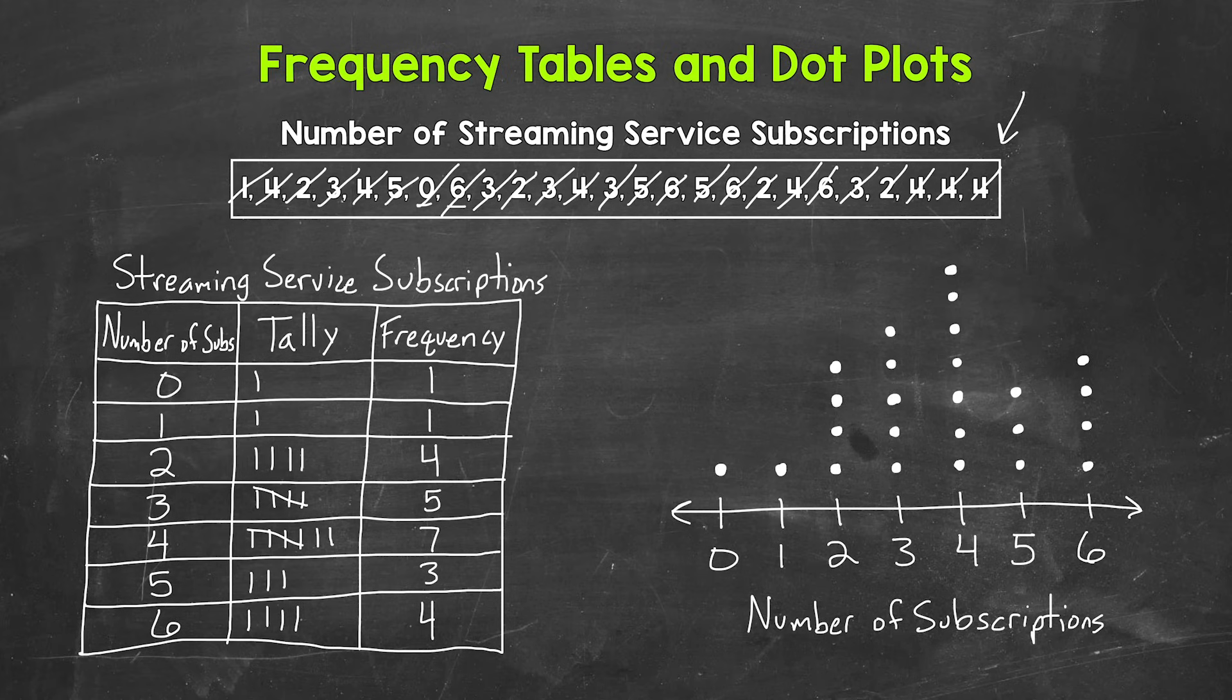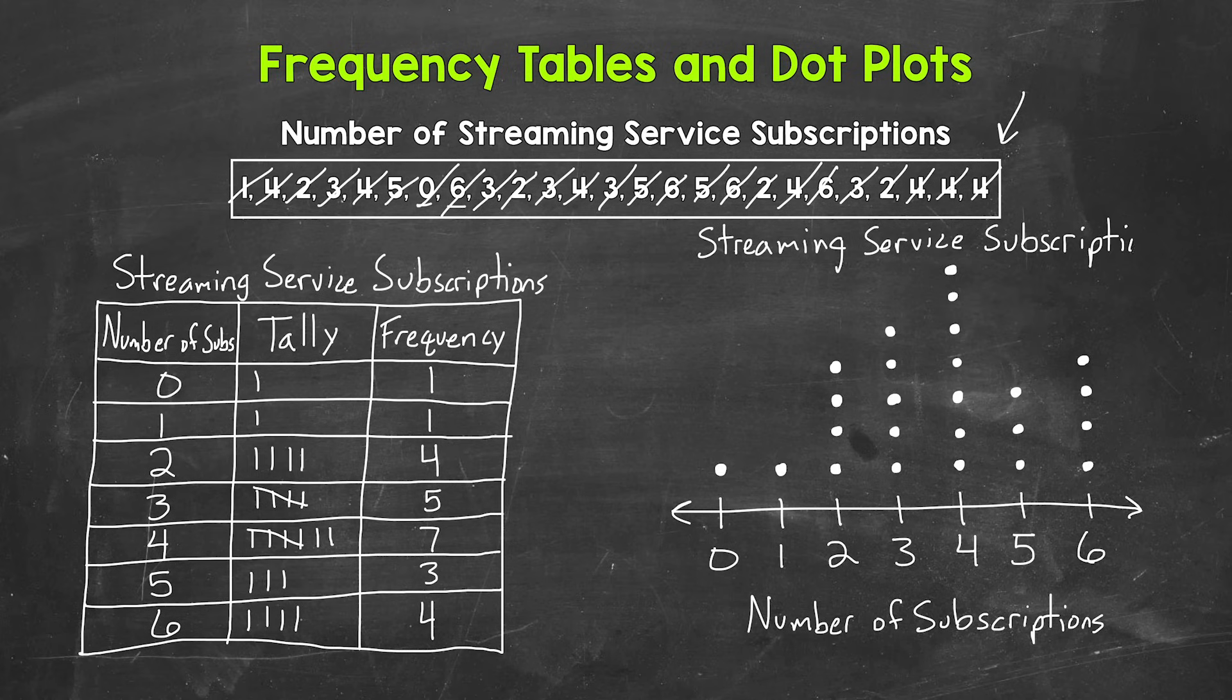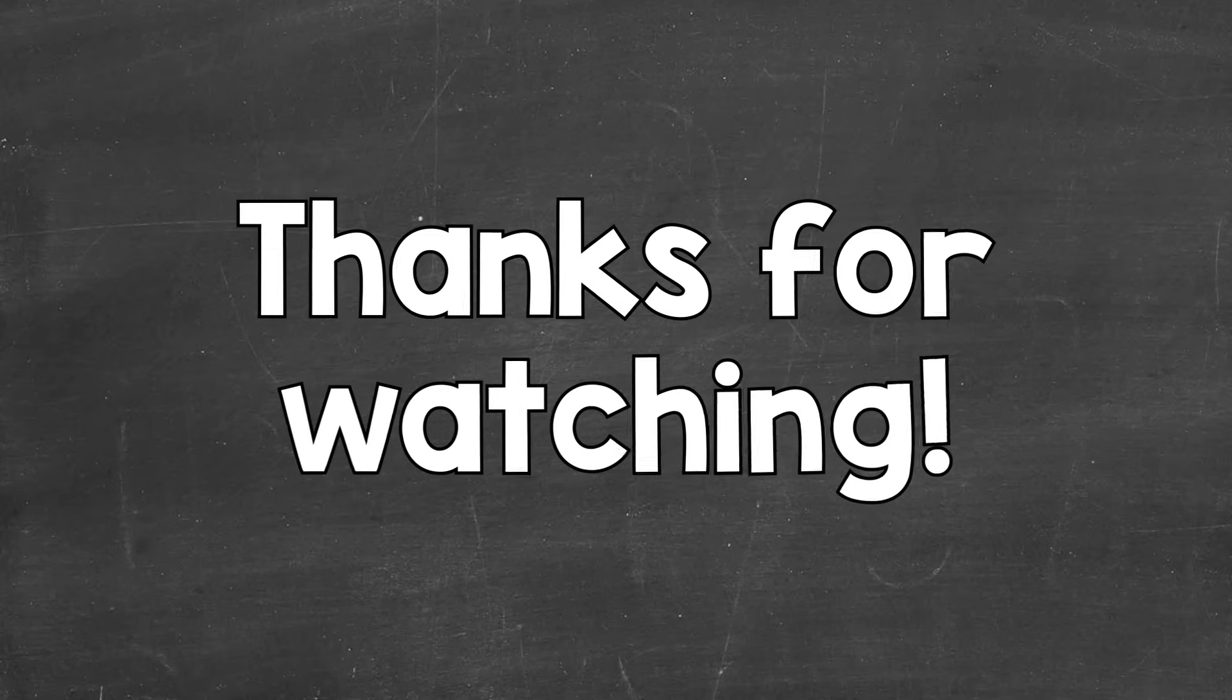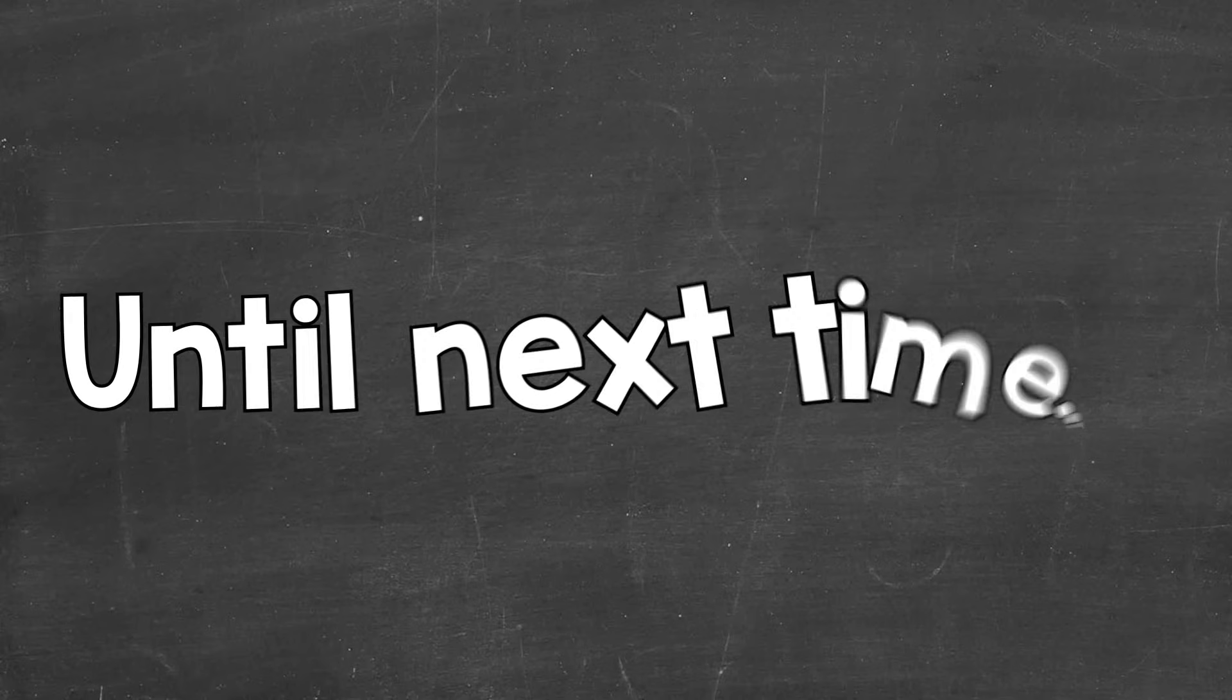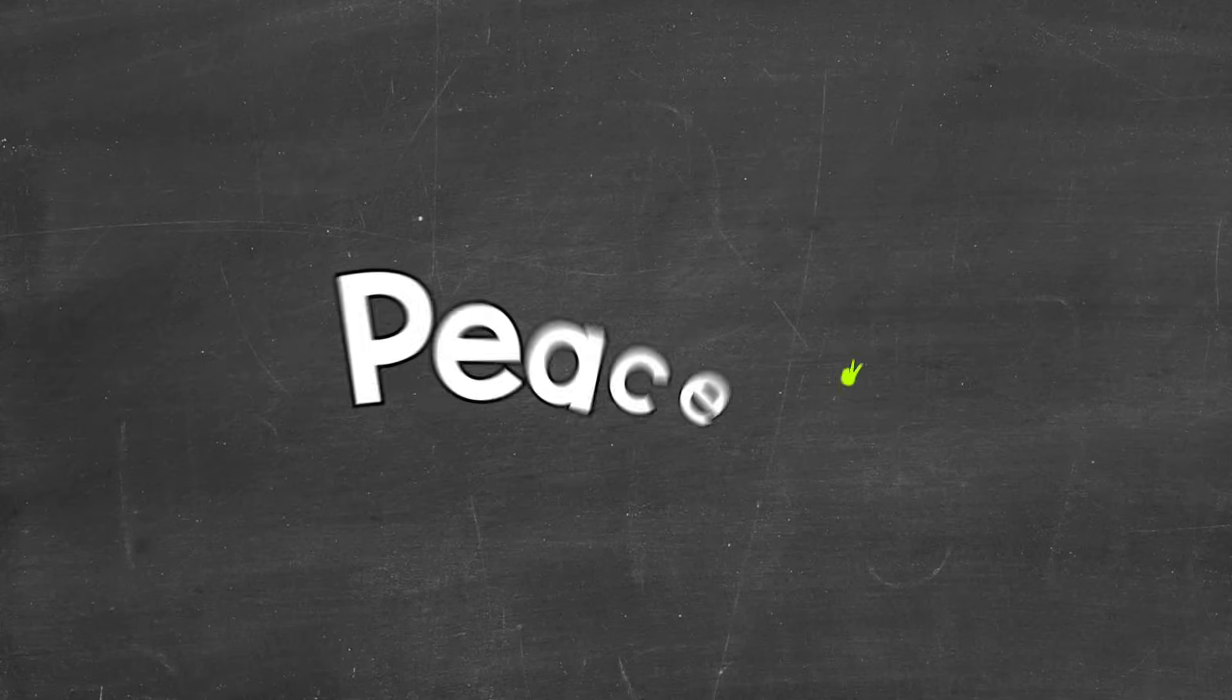And then to wrap this dot plot up, we can put a title up top. So let's put streaming service subscriptions. So there you have it, there's how to make a frequency table and a dot plot. I hope that helped. Thanks so much for watching. Until next time, peace.